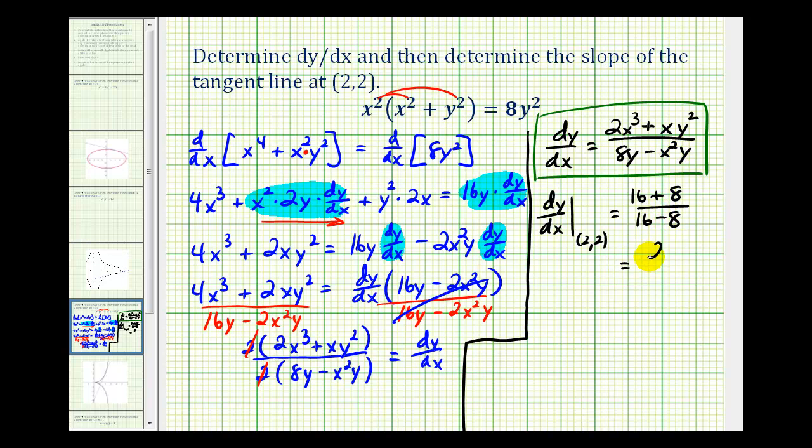So our numerator is going to be 24. Denominator is going to be 8. So our derivative is equal to 3 at the point (2,2). So this tells us the slope of the tangent line at the point (2,2) of the given graph would be 3.